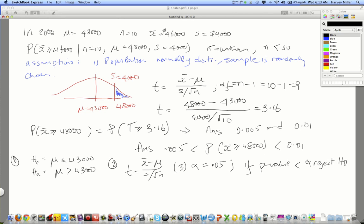Okay? And alpha, in this case, is 5%, so the p-value is less than that. Well, what's the fourth step? The fourth step is to calculate t is equal to x bar minus mu over s over root n. But we already have that, 3.16. That's our step 4.